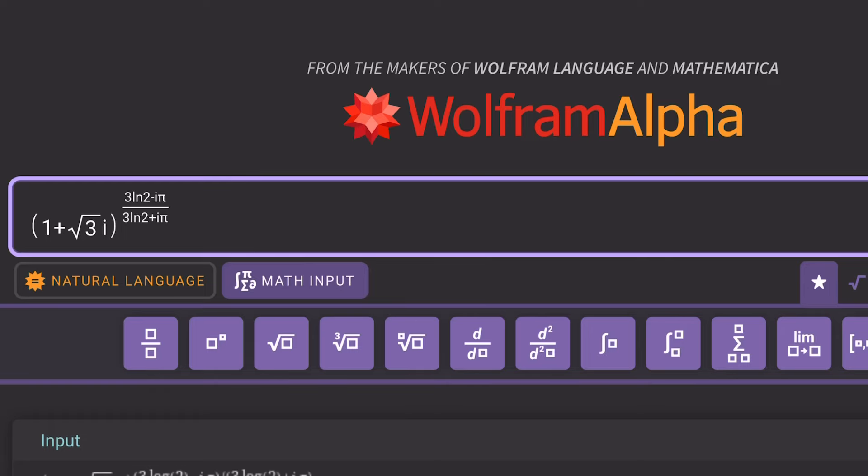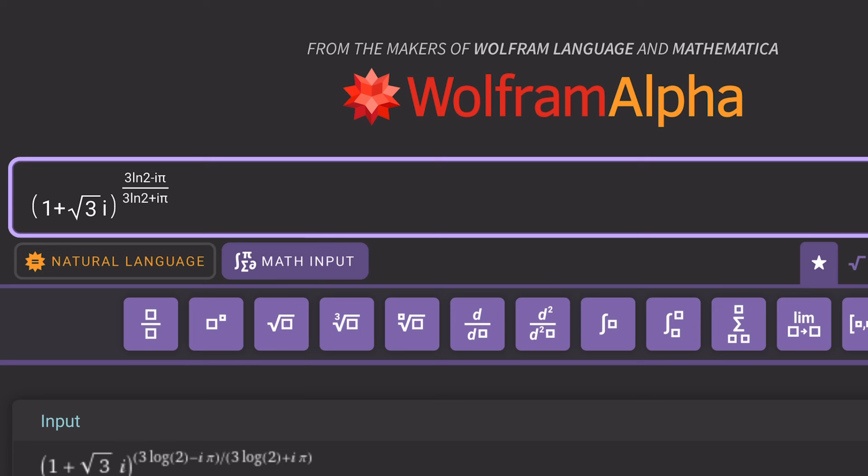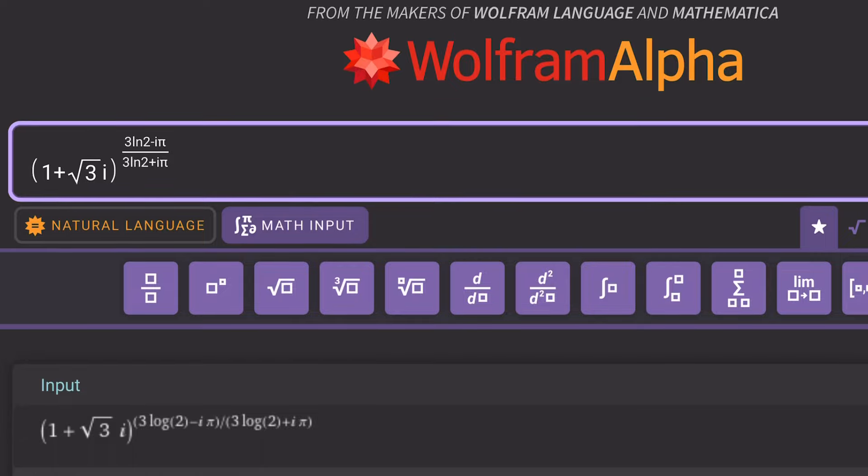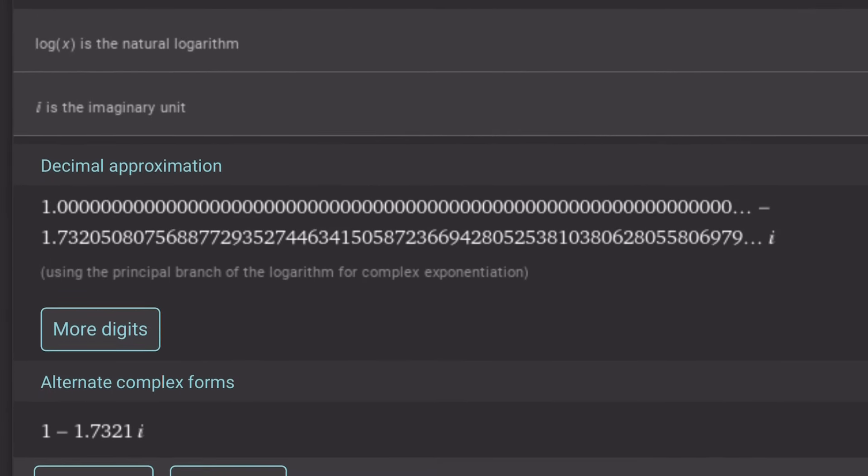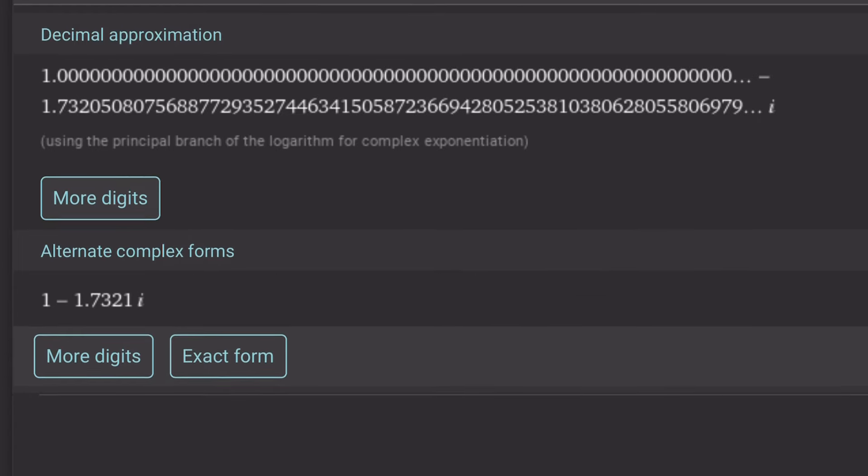So here's what we're looking at. We have the 1 + √3i, which is our base. And then the exponent is 3ln 2 - iπ. Remember, we multiply by 3 to get rid of the fractions. And the result should be 1 - √3i. Is it actually that? Let's go ahead and check it out. And ta-da! The decimal approximation. If you look at it, of course, it is an approximation. But if you really focus on the imaginary part, 1.73205, so on and so forth, it is actually square root of 3. And you can kind of approximate it and write it in an alternate way.